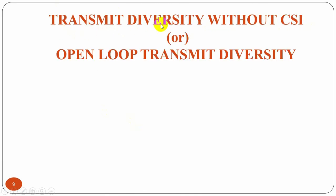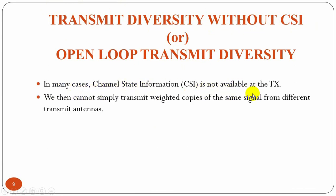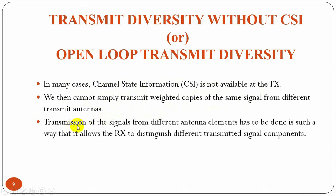The next type of transmit diversity is transmit diversity without CSI, or open-loop transmit diversity. In many cases, channel state information is not available at the transmitter. We then cannot simply transmit weighted copies of the same signal from different transmit antennas. So the transmission of signals from different antenna elements has to be done in such a way that it allows the receiver to distinguish different transmitted signal components.